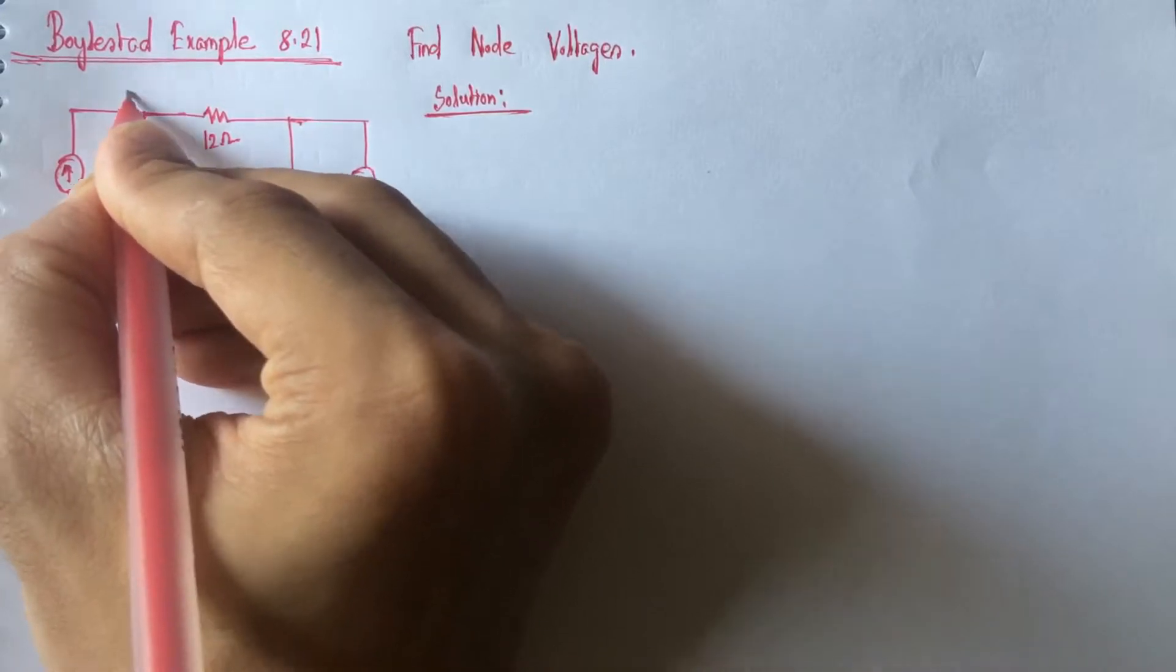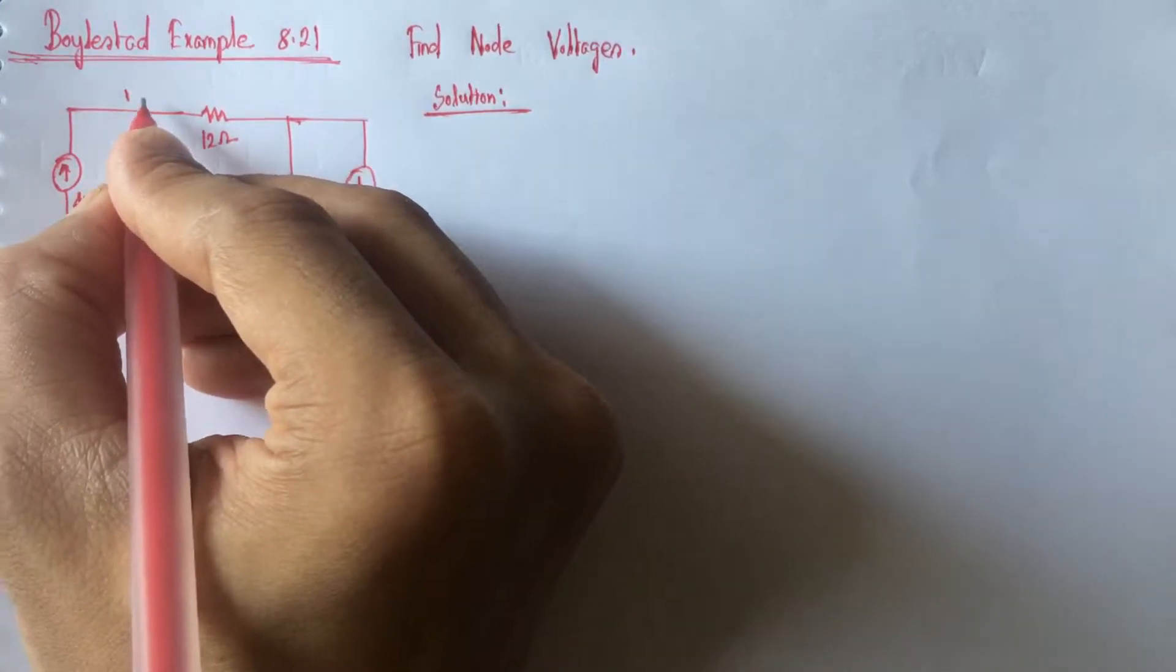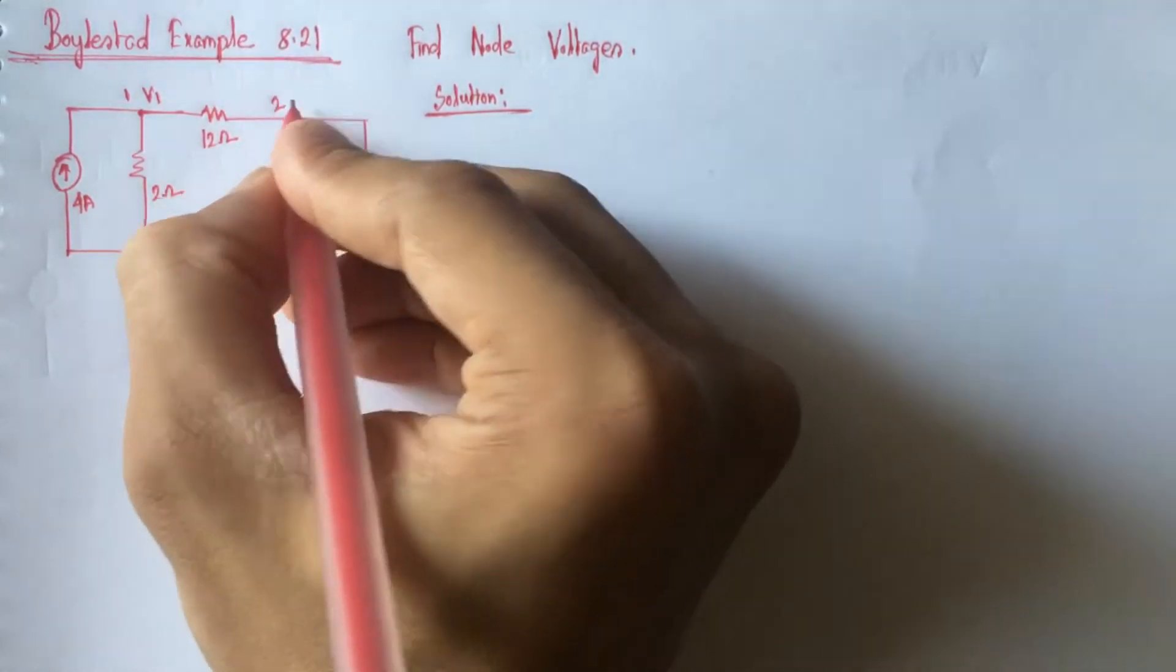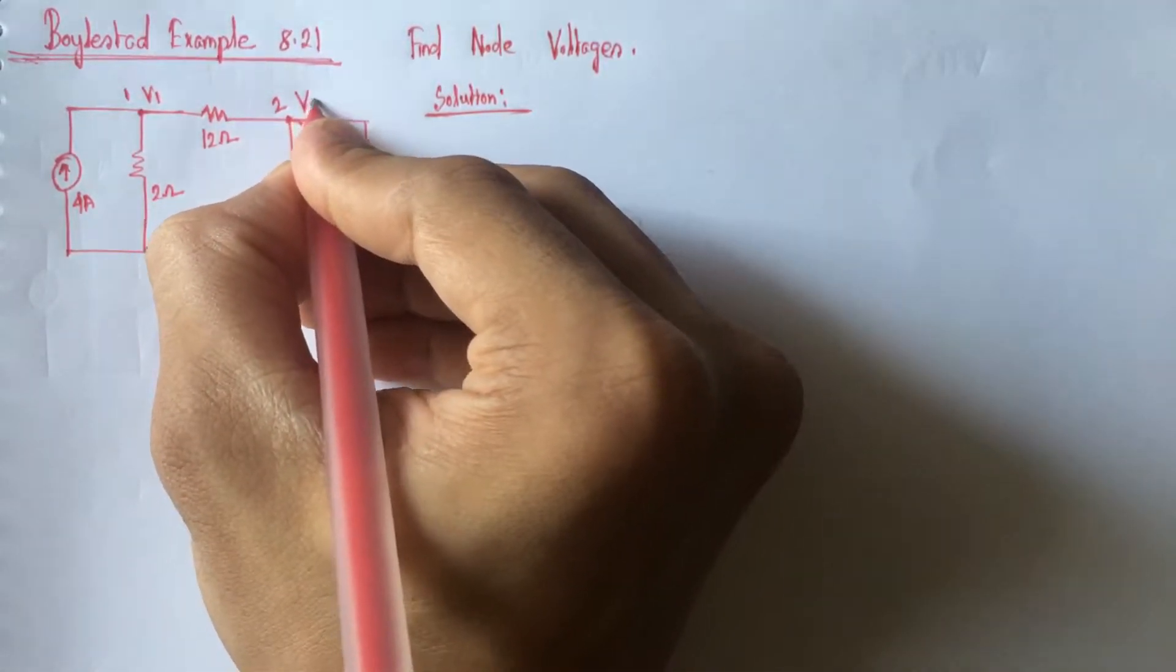Let this be node 1 and the voltage for this node be V1, and let this be node 2 and the voltage for node 2 be V2.